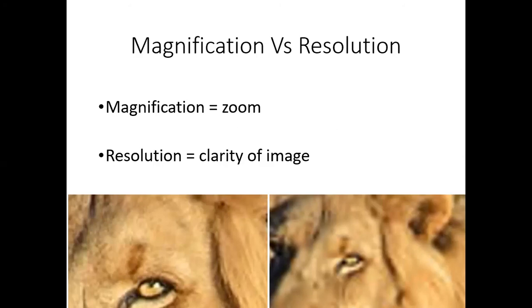You would need to be using an electron microscope to do that, because electron microscopes have such a high resolution you can zoom in far enough. Light microscopes have a much lower resolution in comparison — they're really fuzzy — so after a point it's not worthwhile trying to magnify. Magnification is zoom; resolution is the clarity and clearness of the image.